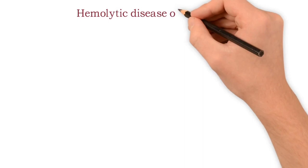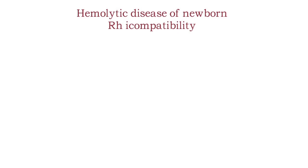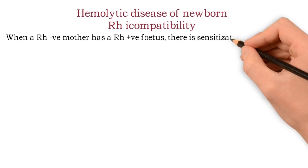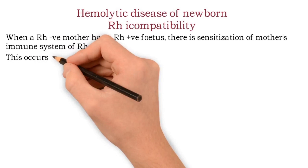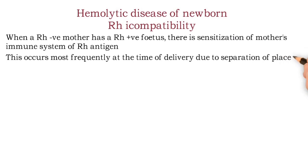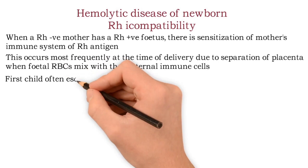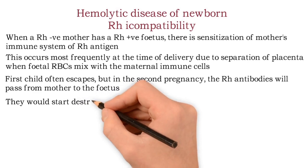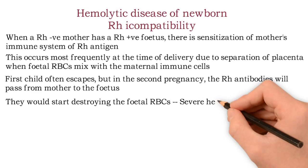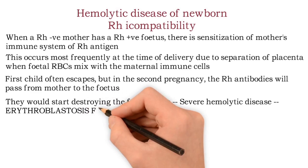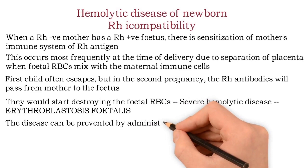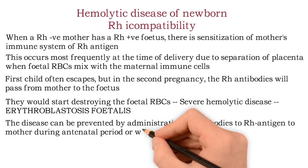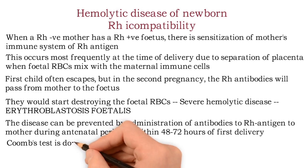The pathological neonatal jaundice is hemolytic disease of the newborn — Rh incompatibility. When a Rh-negative mother has a Rh-positive fetus, there is sensitization of the mother's immune system to the Rh antigen, most frequently at delivery when fetal RBCs mix with maternal immune cells. The first child often escapes, but in the second pregnancy, Rh antibodies pass from mother to fetus, destroying fetal RBCs even before birth — sometimes called erythroblastosis fetalis. This disease can be prevented by administration of antibodies to the Rh antigen to the mother during the antenatal period or within 48 to 72 hours of the first delivery. The Coombs test is done to diagnose Rh incompatibility.